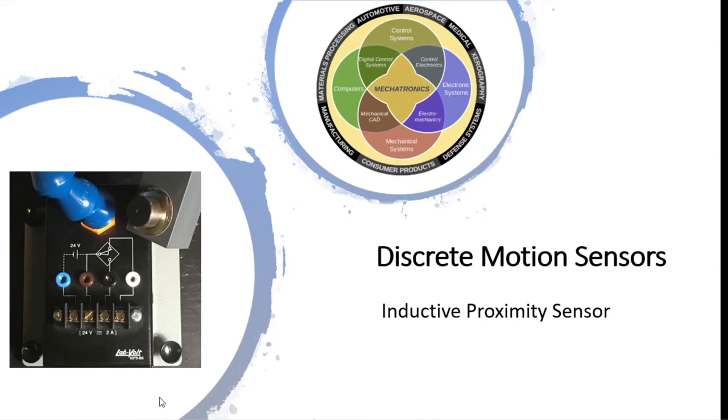All right, so in this section we'll be talking about discrete motion sensors. We'll start off by talking about the inductive proximity sensor, which is used to detect metals and ferrous metals, those with iron in it, gets detected a little bit easier. We'll talk about that in a moment.